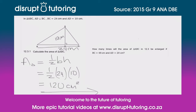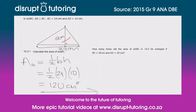Moving on to the next part: how many times will the area of triangle ABC be enlarged if BC equals 48 centimeters and AD equals 20 centimeters? Looking at BC, we see 48 is double 24. Looking at AD, 20 is double 10 — so both dimensions have been doubled.